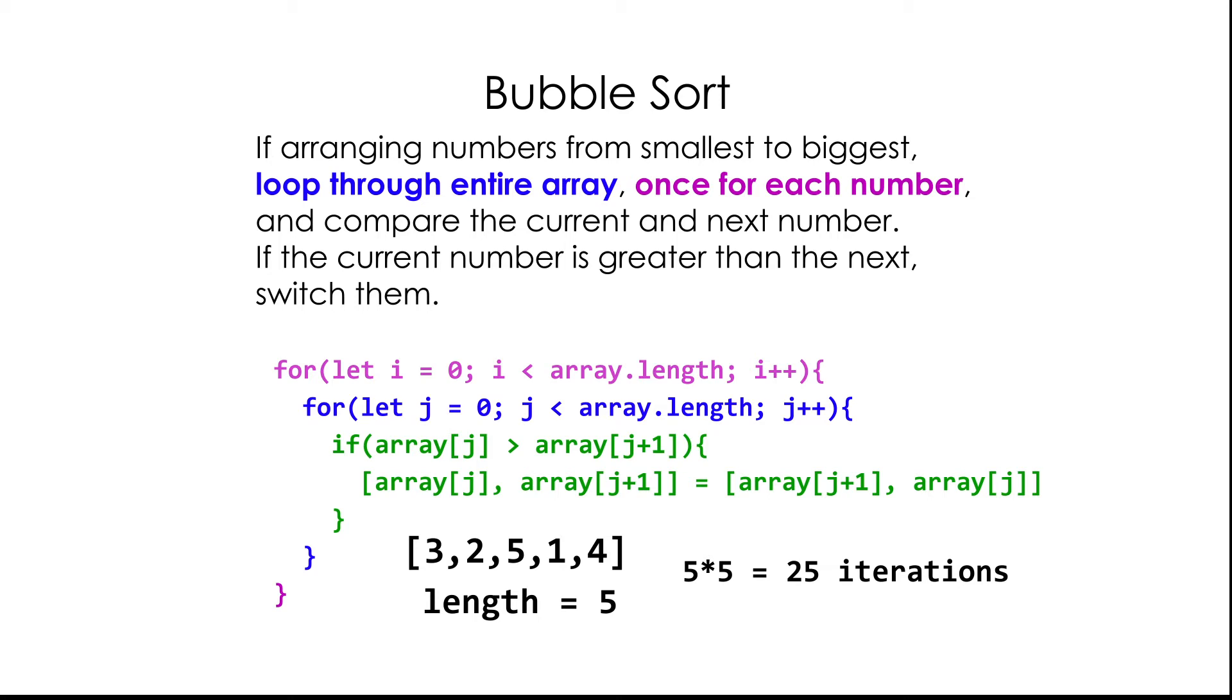So 25 steps, basically. In programming, there's a thing called Big O notation, which basically is a way of figuring out how efficient or how quickly you can solve a problem using an algorithm.